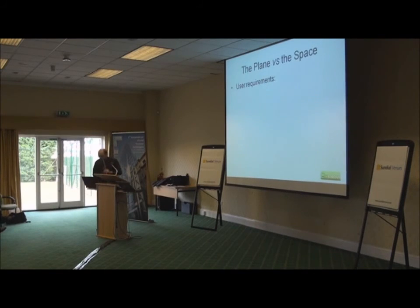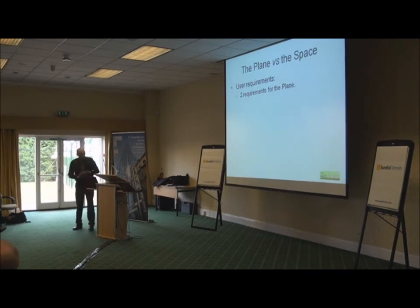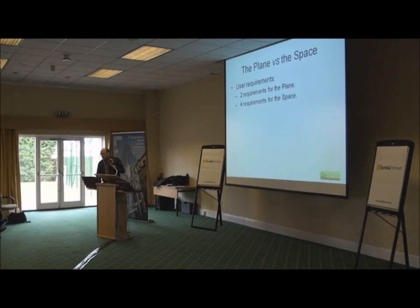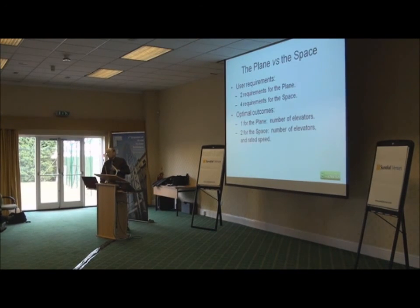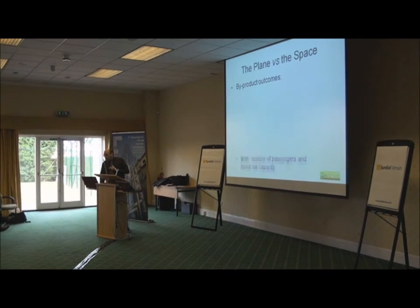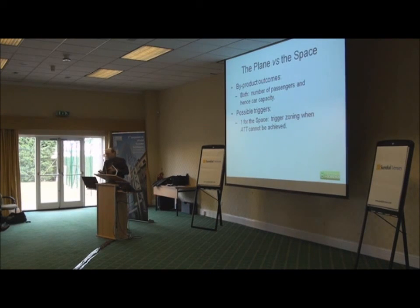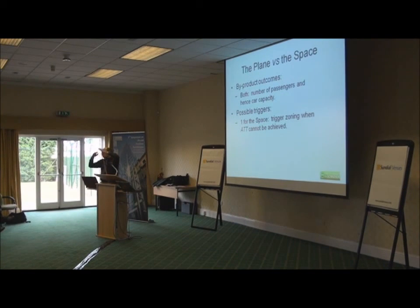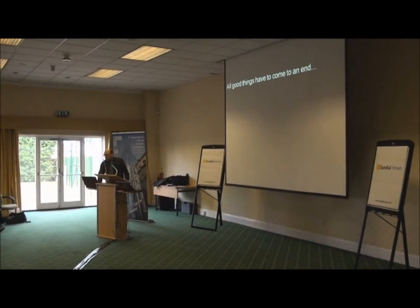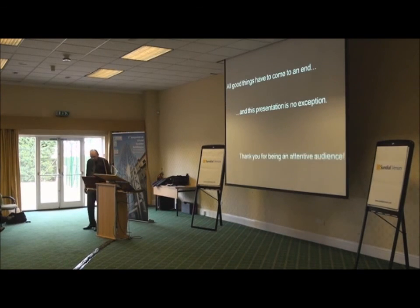Nearing the end — I was always told never to apologize for a short presentation. Let's compare the plane and the space. The plane had two user requirements; the space has four. The optimal outcome for the plane gives you the number of elevators, but for the space you get the number of elevators and the suggested rated speed. As a by-product you also get the passenger numbers and hence the car capacity. Possible triggers for zoning — which I haven't fully investigated here — but people talk about 16 lifts in a zone: the rationale is actually the traveling time. If you can't achieve the required traveling time no matter how much you increase speed, you have to start zoning. Thank you very much for being a great audience.